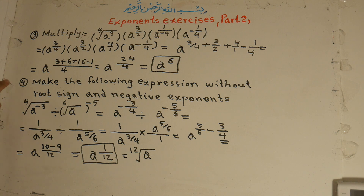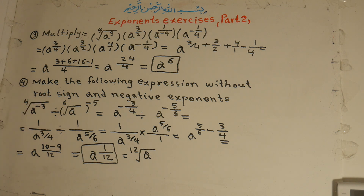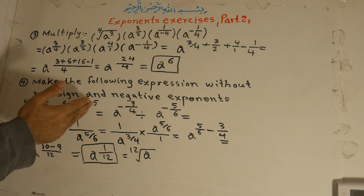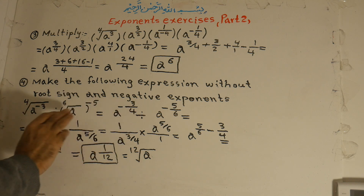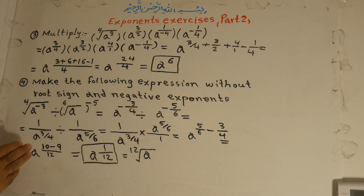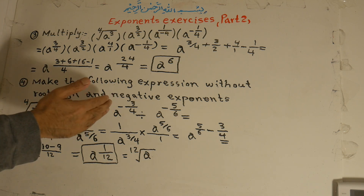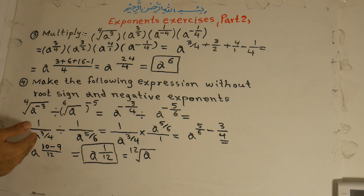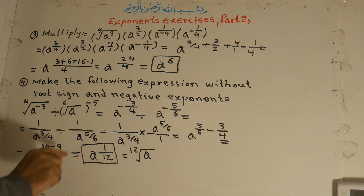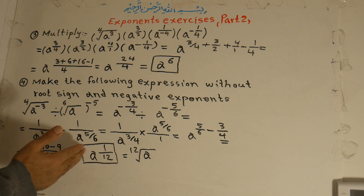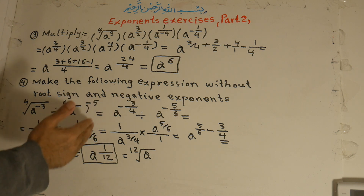Exercise number 4: make the following expression without root sign and negative exponents. A to the power of negative 4 under the fourth root — negative 3 under the fourth root — divided by a to the power of 6 root, under the 6th root to the power of negative 5. Now it becomes a to the power of minus 3 over 4, divided by a to the power of minus 5 over 6. We make this positive, so the numerator comes to the denominator — they become inverse. A to the power of 1 over 3 over 4. The second one: a to the power of positive 5 over 6.